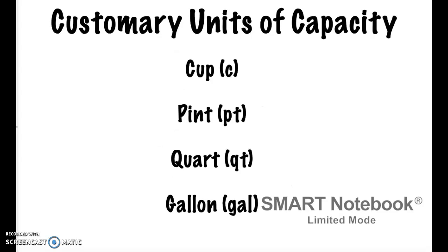So here are our four units: cups, pints, quarts, and gallons. This is how you abbreviate them: C for cup, Pt for pint, Qt for quart, and Gal for gallon. Notice that none of them are capitalized when you do the abbreviations.